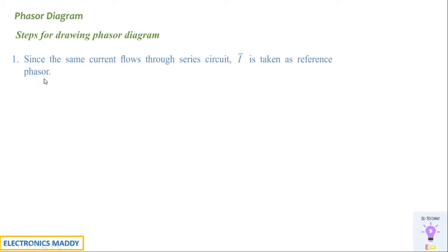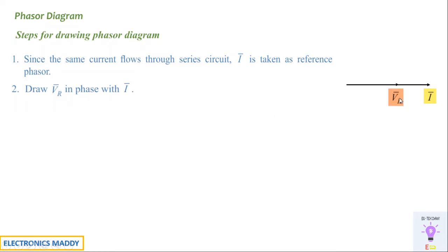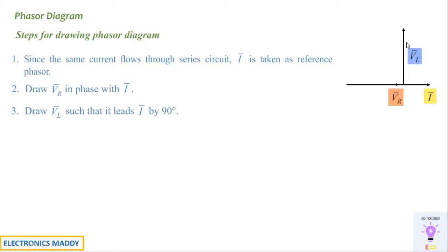Since the same current flows through the series circuit, I-bar is taken as the reference phasor, represented along the horizontal axis. Next, draw VR in phase with I, since voltage across a resistor is in phase with current. Then draw VL such that it leads I by 90 degrees — meaning VL is perpendicular to I — so I draw it in the vertical direction.